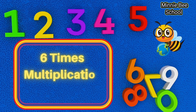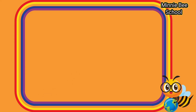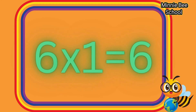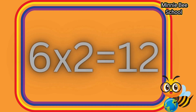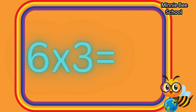Six times multiplication table. Six times one is six. Six times two is twelve. Six times three is eighteen.